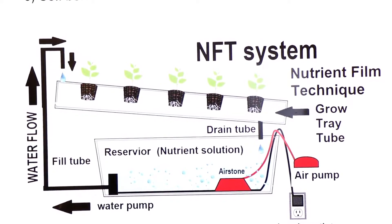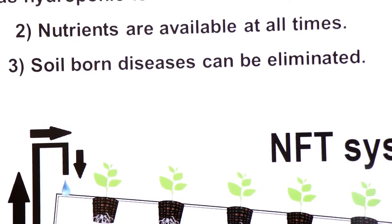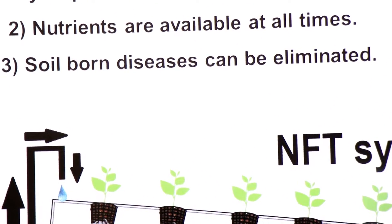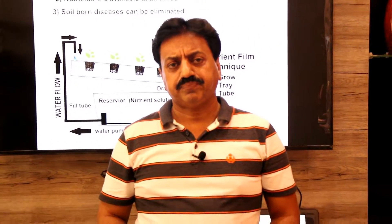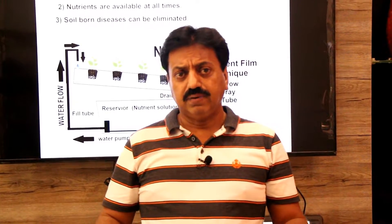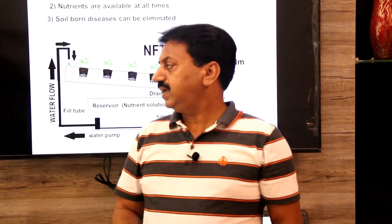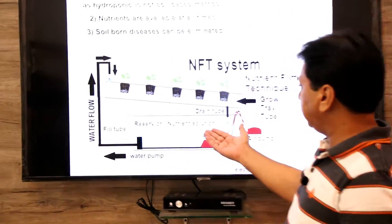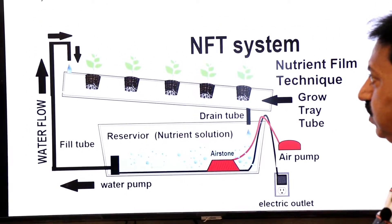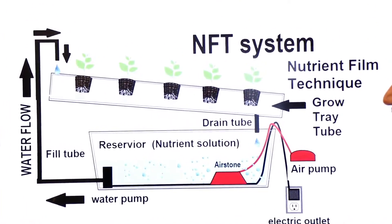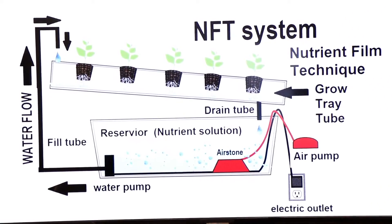Number three — soil-borne diseases can be eliminated. In soil, viruses, bacteria, and fungi are found that cause diseases in plants. But this hydroponics kit is manmade and free from germs, so there is no chance of soil-borne diseases here.